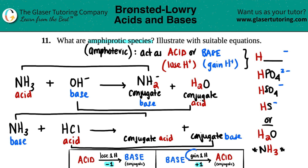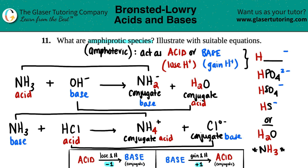The base gains a hydrogen, so NH₃ bumps up from 3 to 4 hydrogens: NH₄⁺. Adjust the charge: zero plus one is +1. On the flip side, the acid HCl loses its one hydrogen — get rid of it, so now it's just Cl⁻. There was a zero charge, minus one gives −1. So HCl becomes Cl⁻.